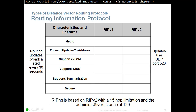RIPng is based on RIPv2 and uses a 15-hop limitation and an administrative distance of 120. The administrative distance represents trustworthiness. Imagine you're learning about a destination from two sources: one speaking EIGRP and the other speaking RIP. EIGRP has a lower administrative distance by default than RIP, so you believe EIGRP.